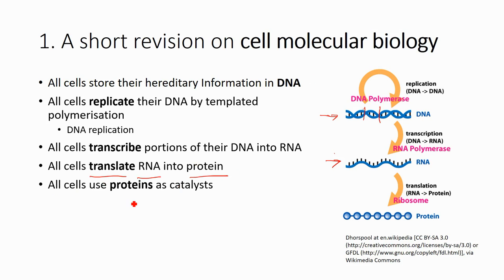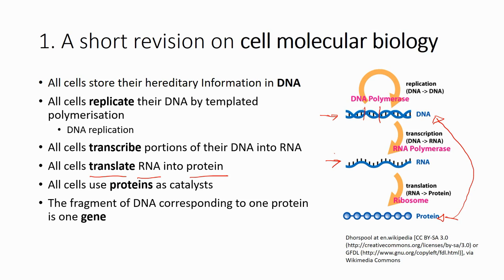After that, the cell also translates the RNA into protein. All cells use proteins as catalysts — protein is a very important molecule in our body — but everything starts from the DNA. Each protein is produced by a fragment of DNA, and we call that fragment a gene.